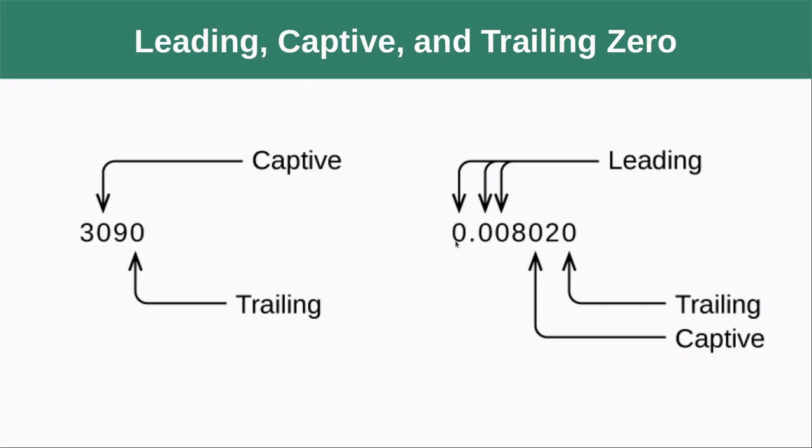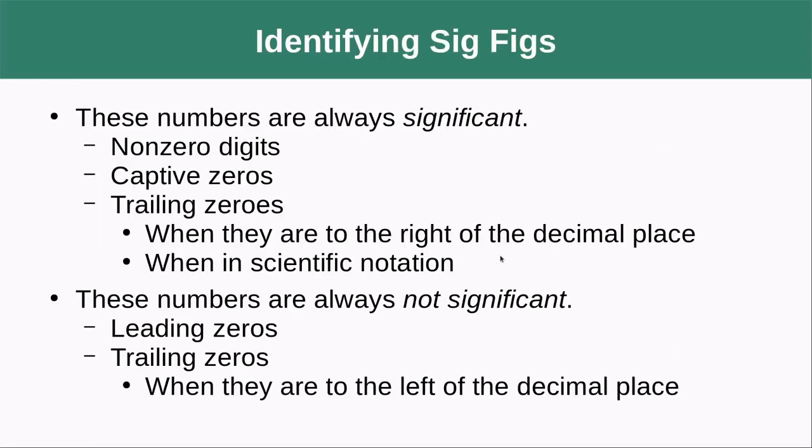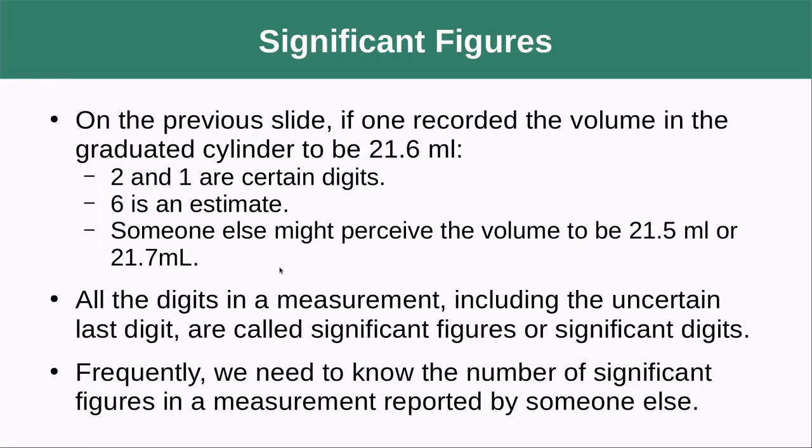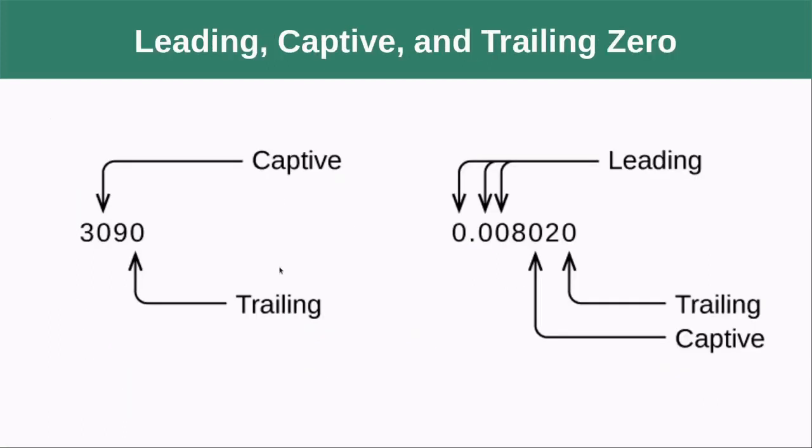Here we have our leading zeros here, here, and here. It doesn't matter if they're to the left or right of the decimal place. They are not going to be significant. Here we have our captive zero and again just like when it was to the left of decimal place it is significant.